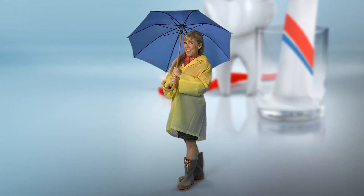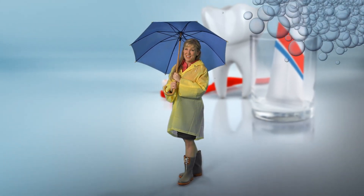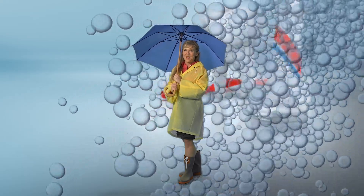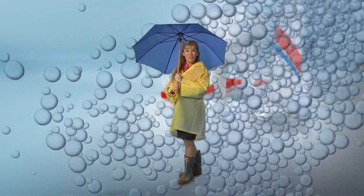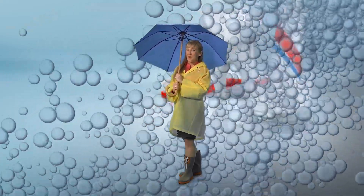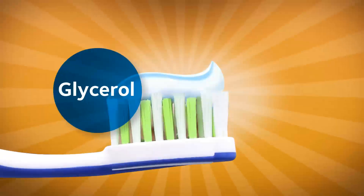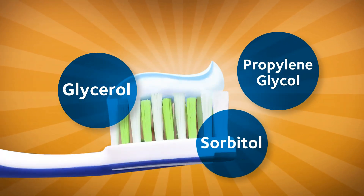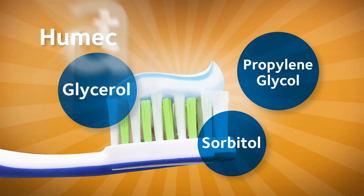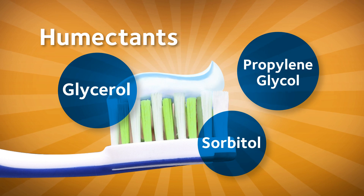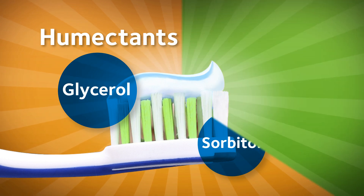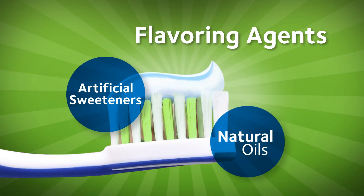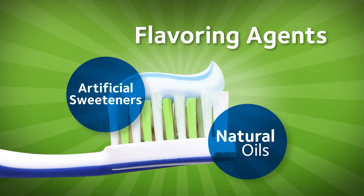Other inactive ingredients common to all toothpastes include detergents that create the foaming action you see. One common detergent is sodium lauryl sulfate. Glycerol, propylene glycol, and sorbitol are all humectants — they keep your toothpaste from drying out in the tube.